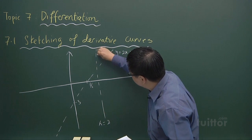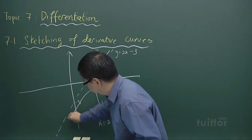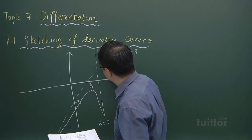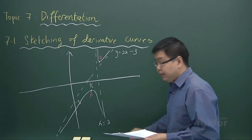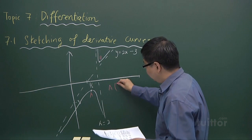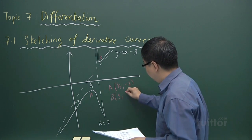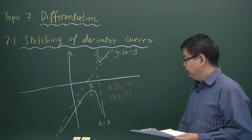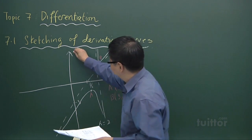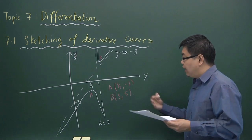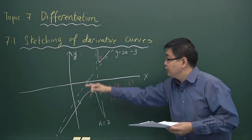Suppose the graph is like this. Let's label this point A and this point B. Suppose point A, for simplicity, is at (3/2, −2), and point B is at (3, 5). So this is actually the graph of y equals f(x), and we are going to run through how this problem leads to the steps of the table shown, which will help us sketch the derivative graph.